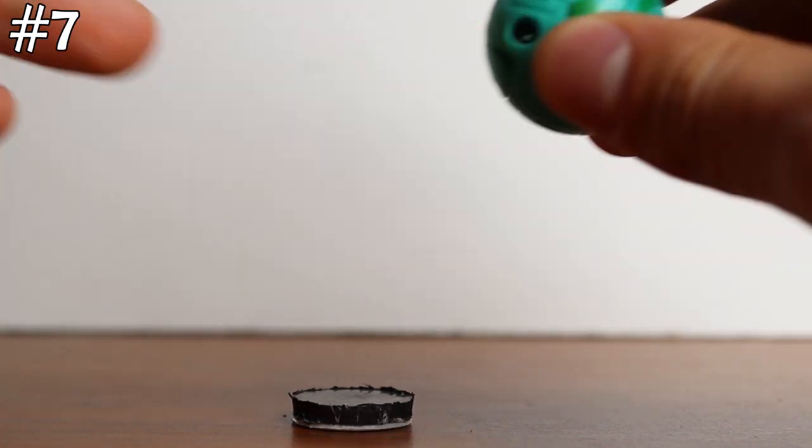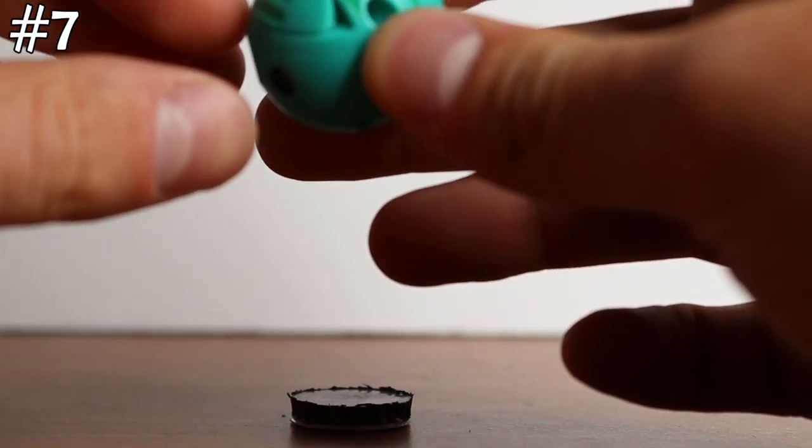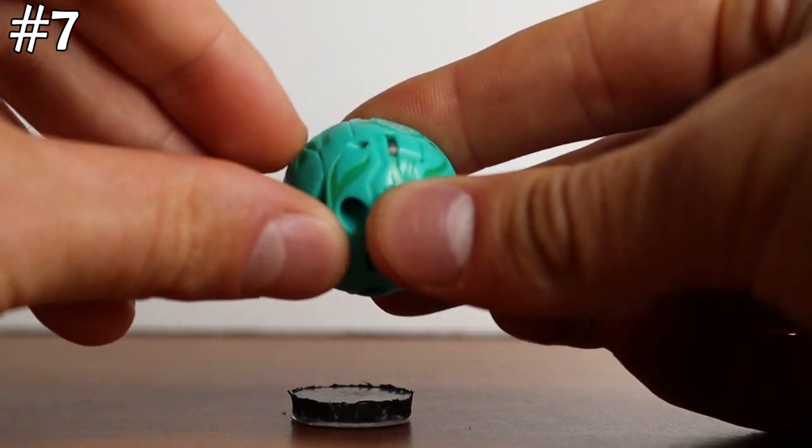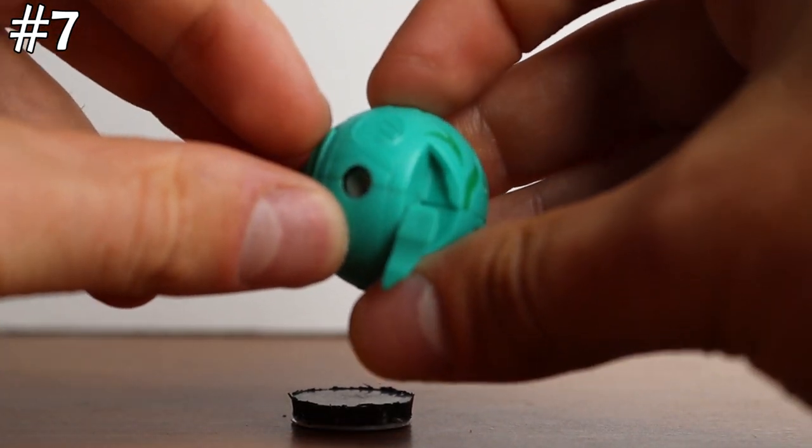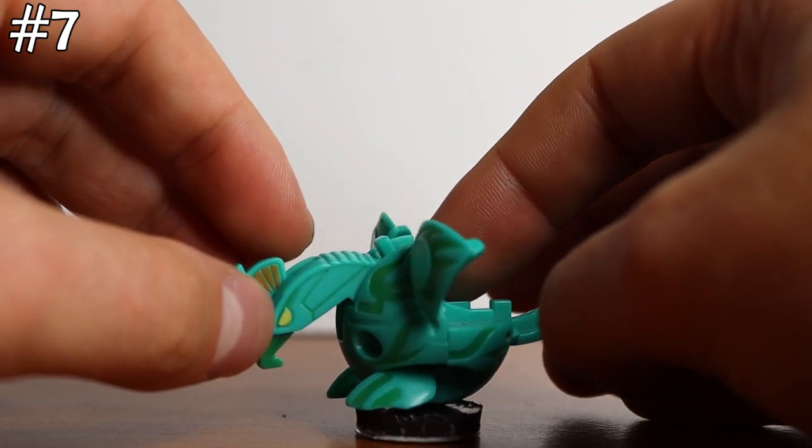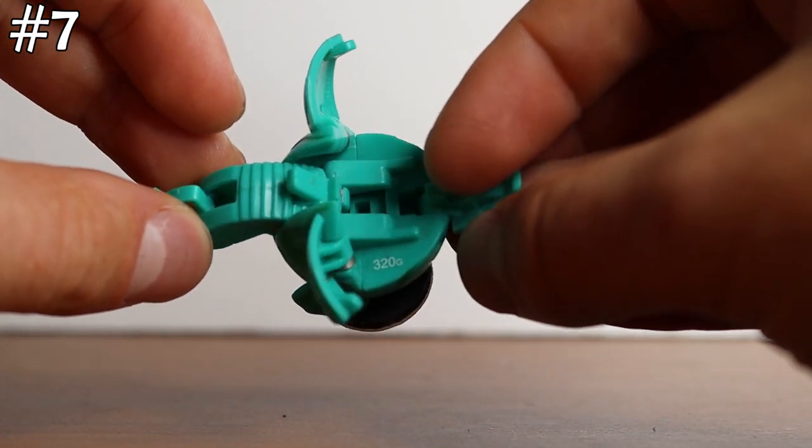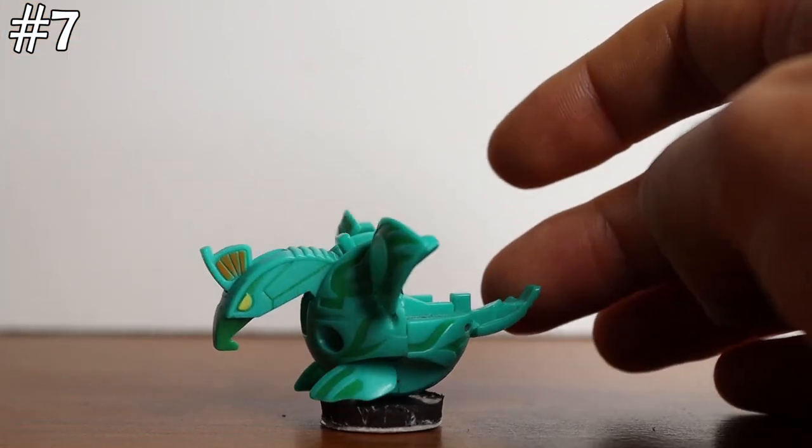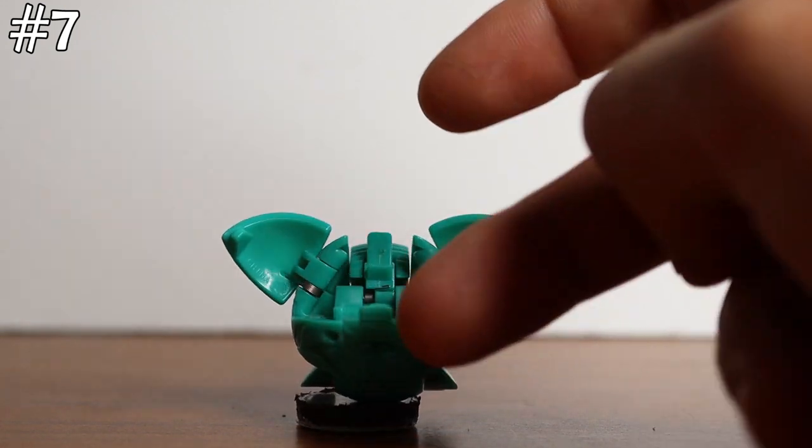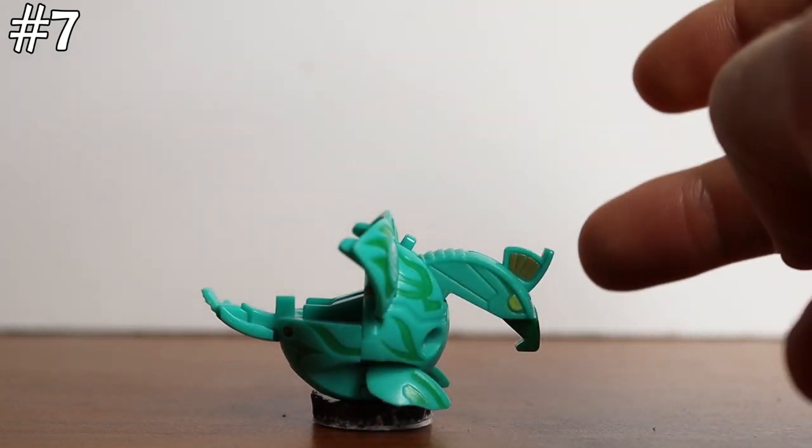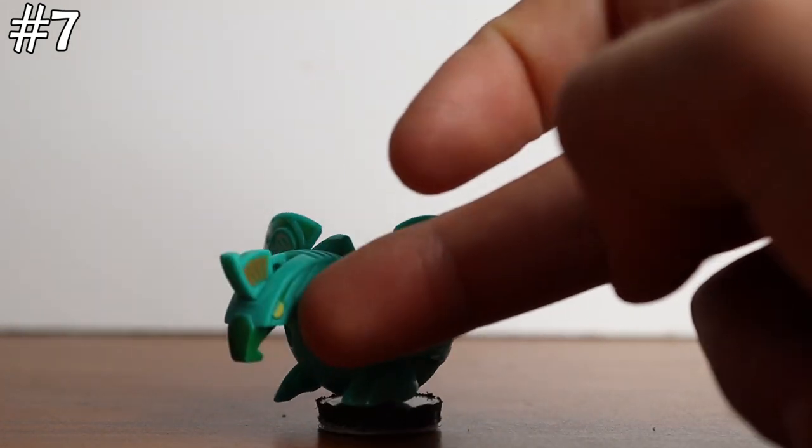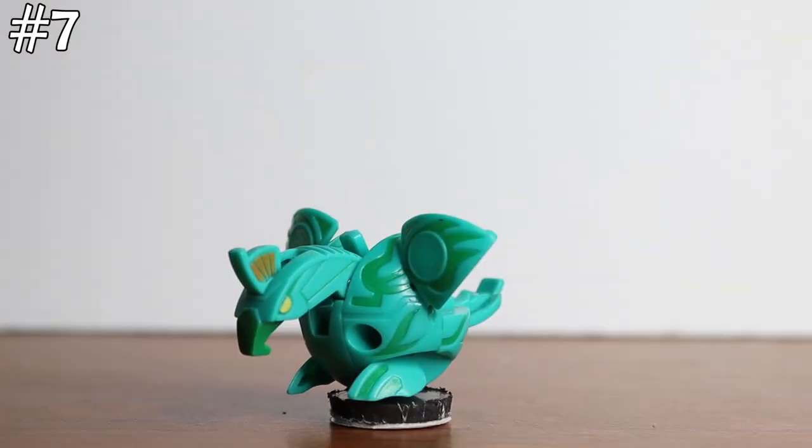They range from that price to a little bit higher. Skyrus is again, a really awesome Bakugan from the first season of the show. She's 320 Gs there. And I'll go ahead and do a spin here just so you can see here. Again, these are pretty difficult to find.